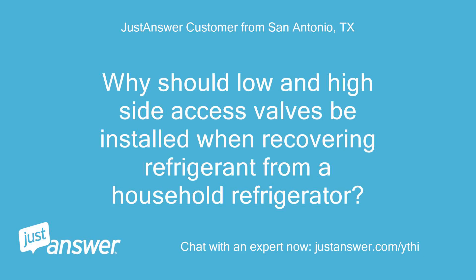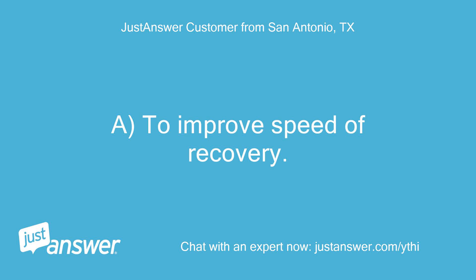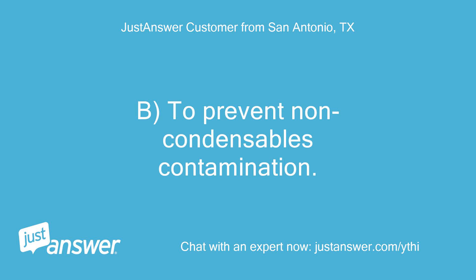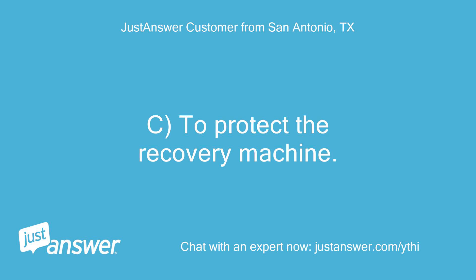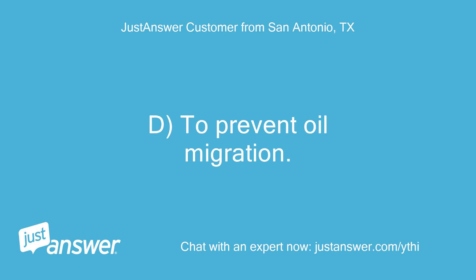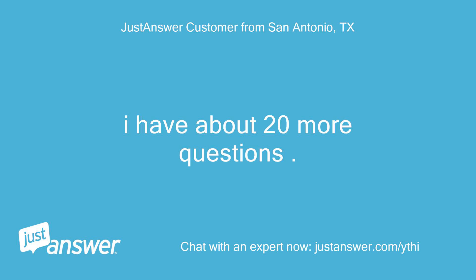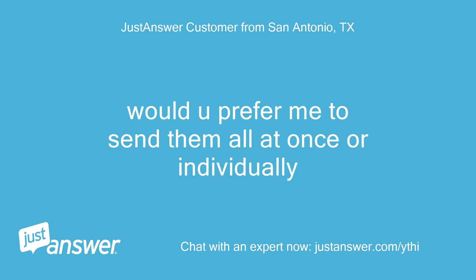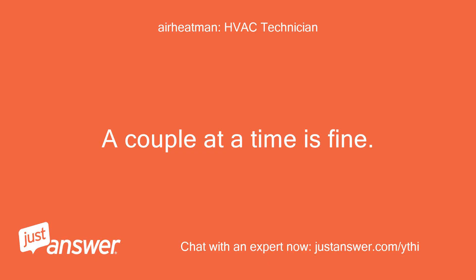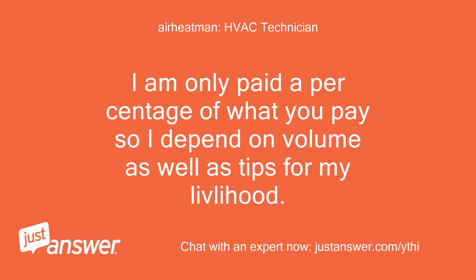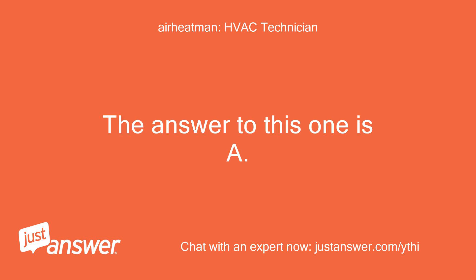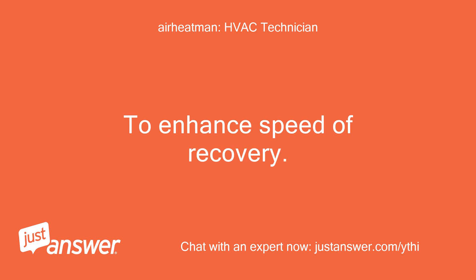Why should low and high side access valves be installed when recovering refrigerant from a household refrigerator? A — to improve speed of recovery. B — to prevent non-condensibles contamination. C — to protect the recovery machine. D — to prevent oil migration. The answer to this one is A — to enhance speed of recovery.